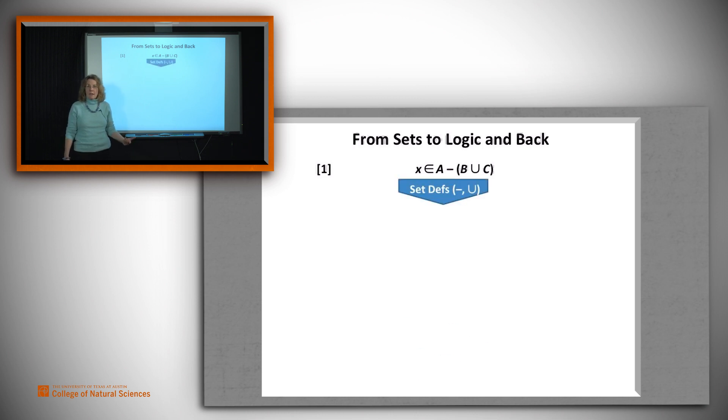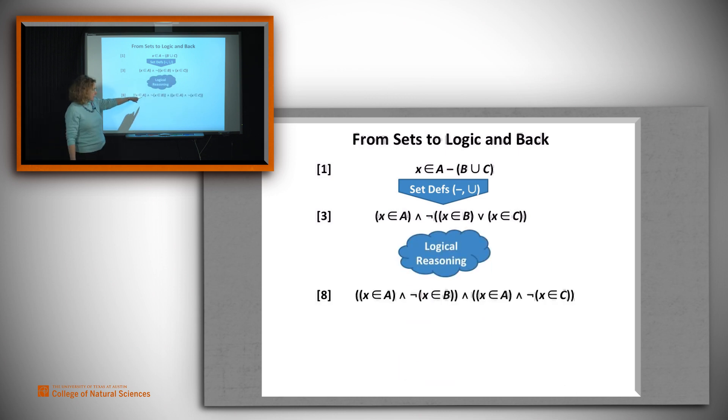And then we should be able to come back. So we'll use the set definitions, in this case of set difference and union, because those are the two we use. We'll derive this claim. We'll see how in a minute. It takes a couple steps. But now you can see that we've got logical operators and, not, or, and so forth. We can use Boolean reasoning. And we're going to get this claim.